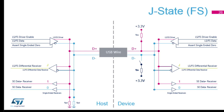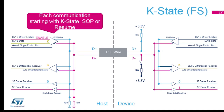When we enable the transceivers, the host will drive D− high in full speed, producing a K state on the bus. So after the default J state from pull-ups and pull-downs, the transceivers are used to set the line levels to transmit data.